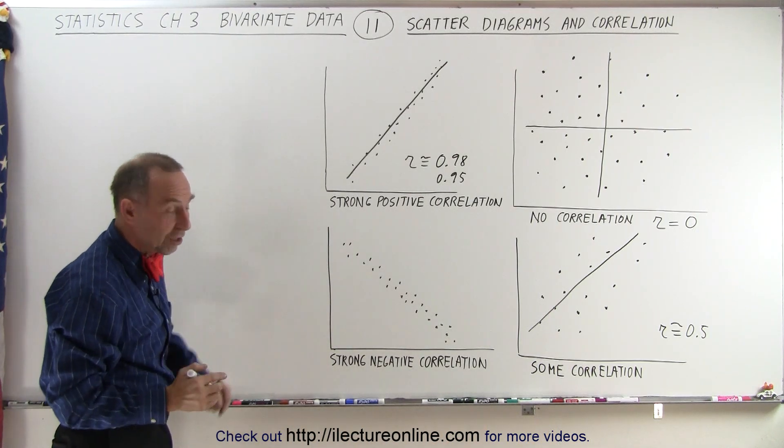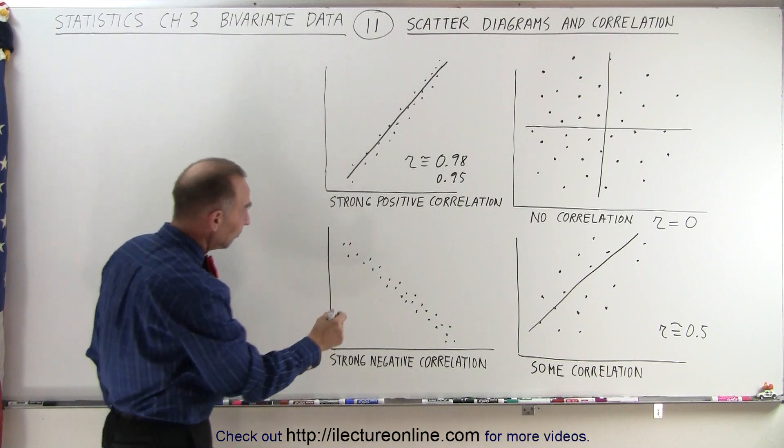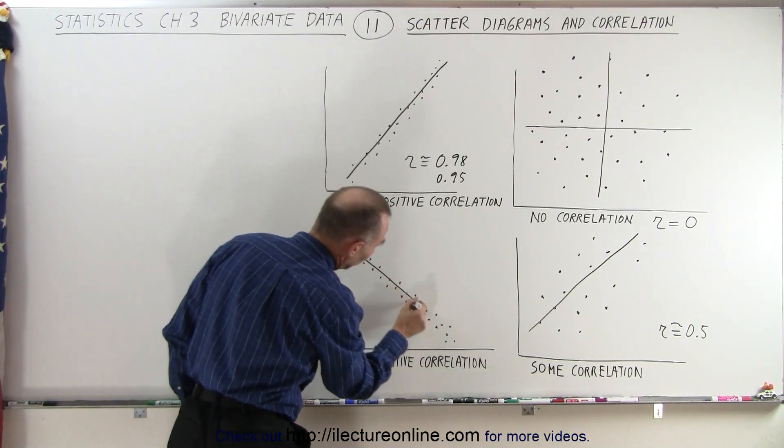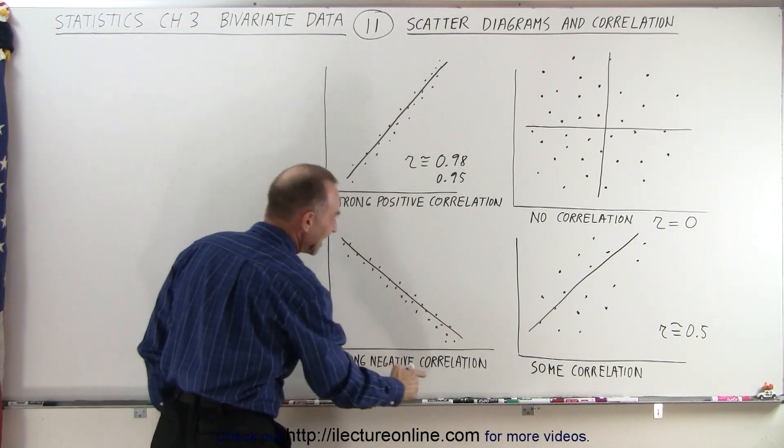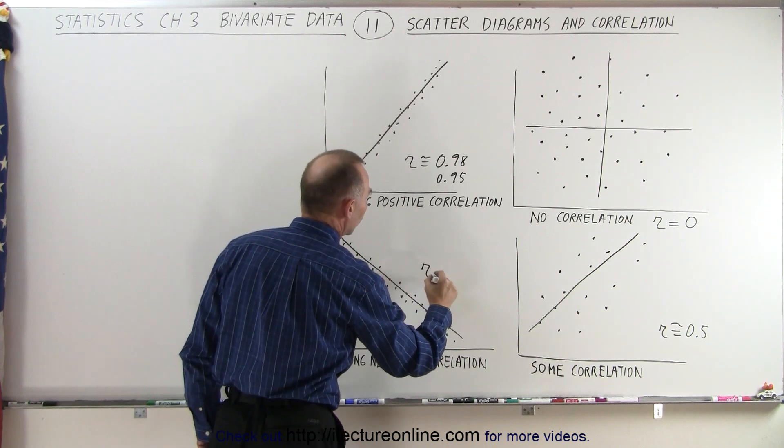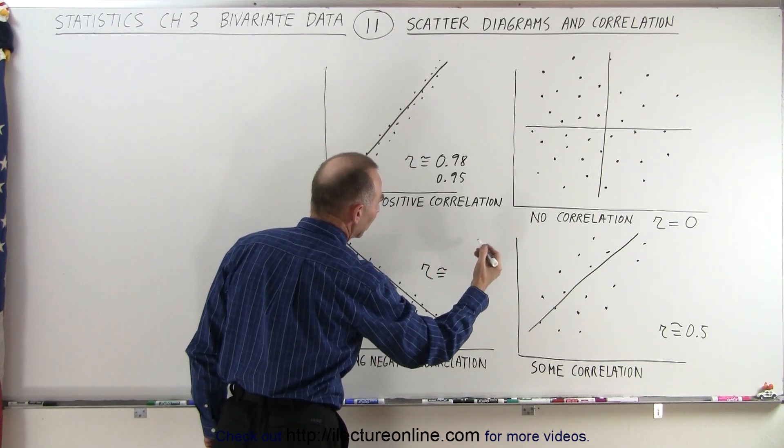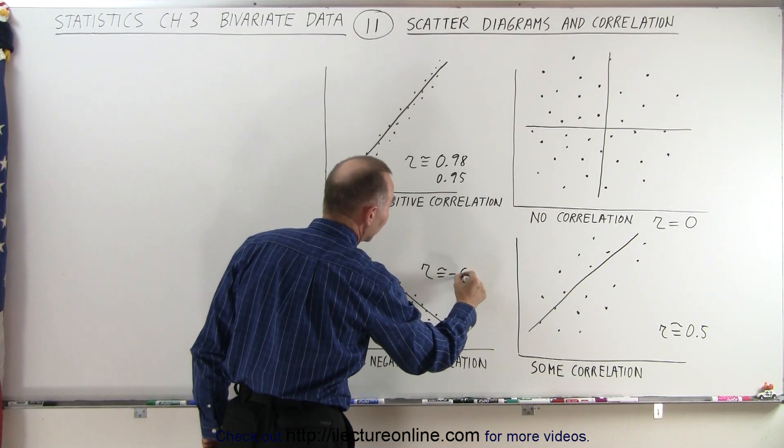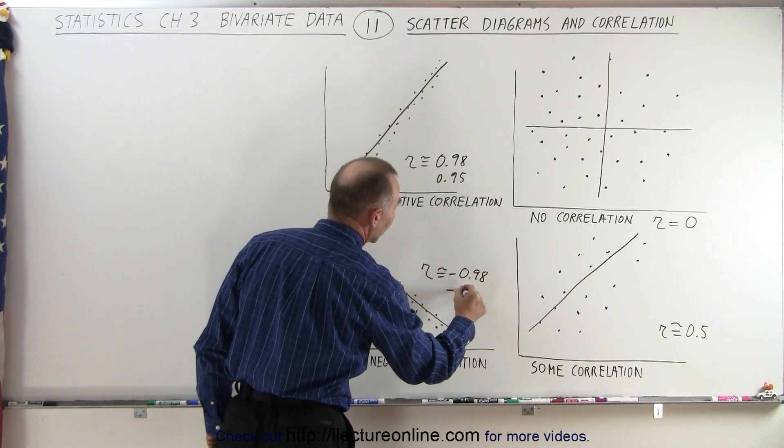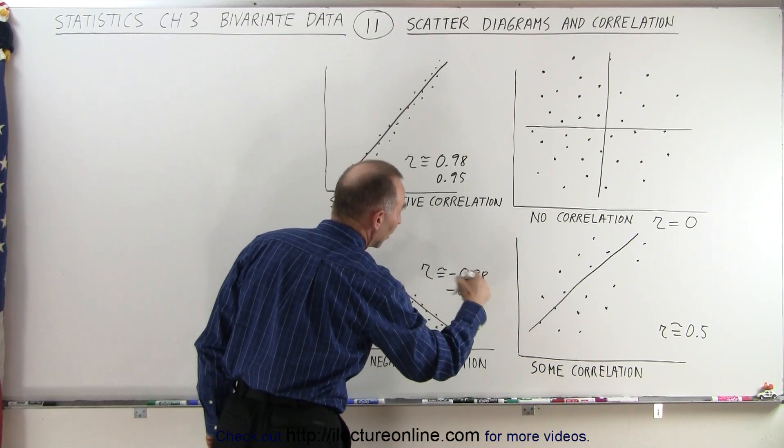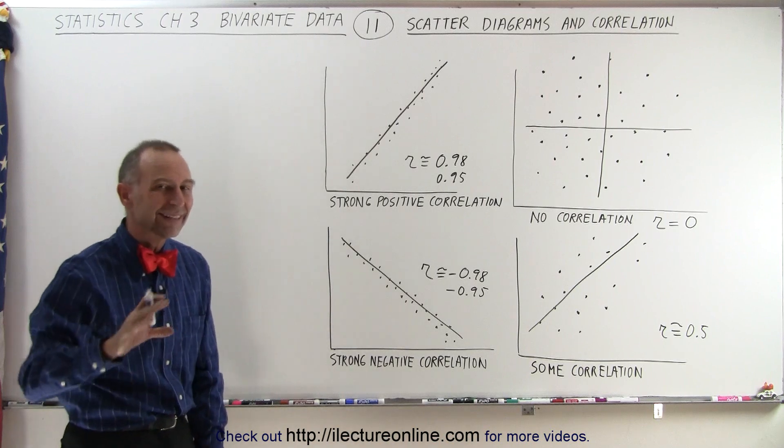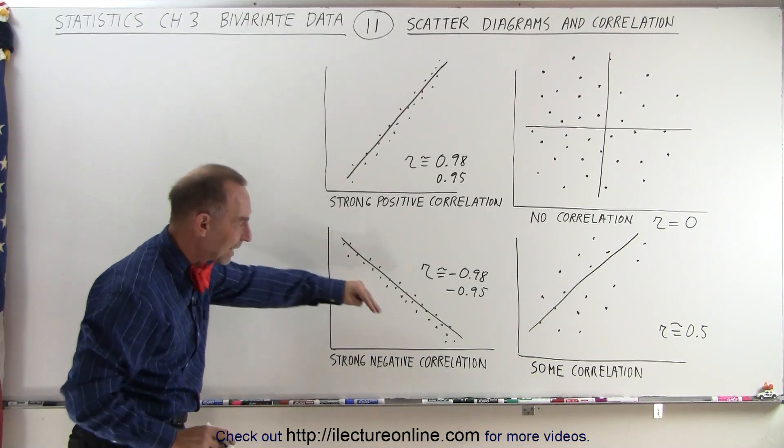Here we have a similar situation, but in this case the slope is negative. So we can say that there's a strong negative correlation, and so the correlation coefficient is approximately equal to negative 1, maybe negative 0.98 or maybe 0.95 or something like that. A number close to 1, but it's a negative number because we have a negative correlation.